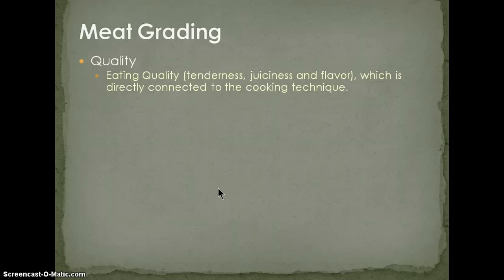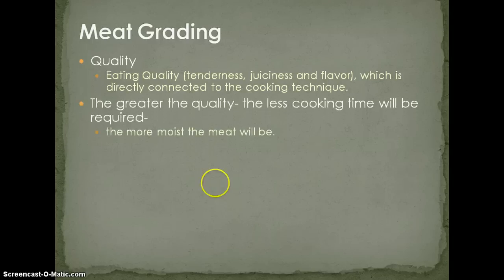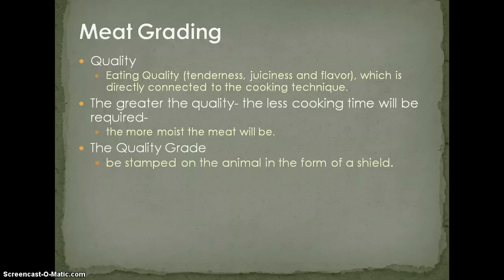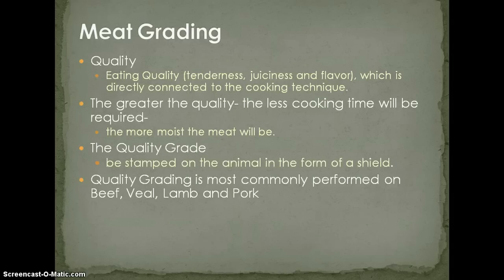Quality grade determines eating quality — specifically tenderness, juiciness, and flavor. It's directly connected to how the meat will be cooked: the greater the quality, the less cooking time required and the more moist the meat will be. The quality grade is stamped on the animal in the form of a shield and is most commonly applied to beef, veal, lamb, pork, and chicken.